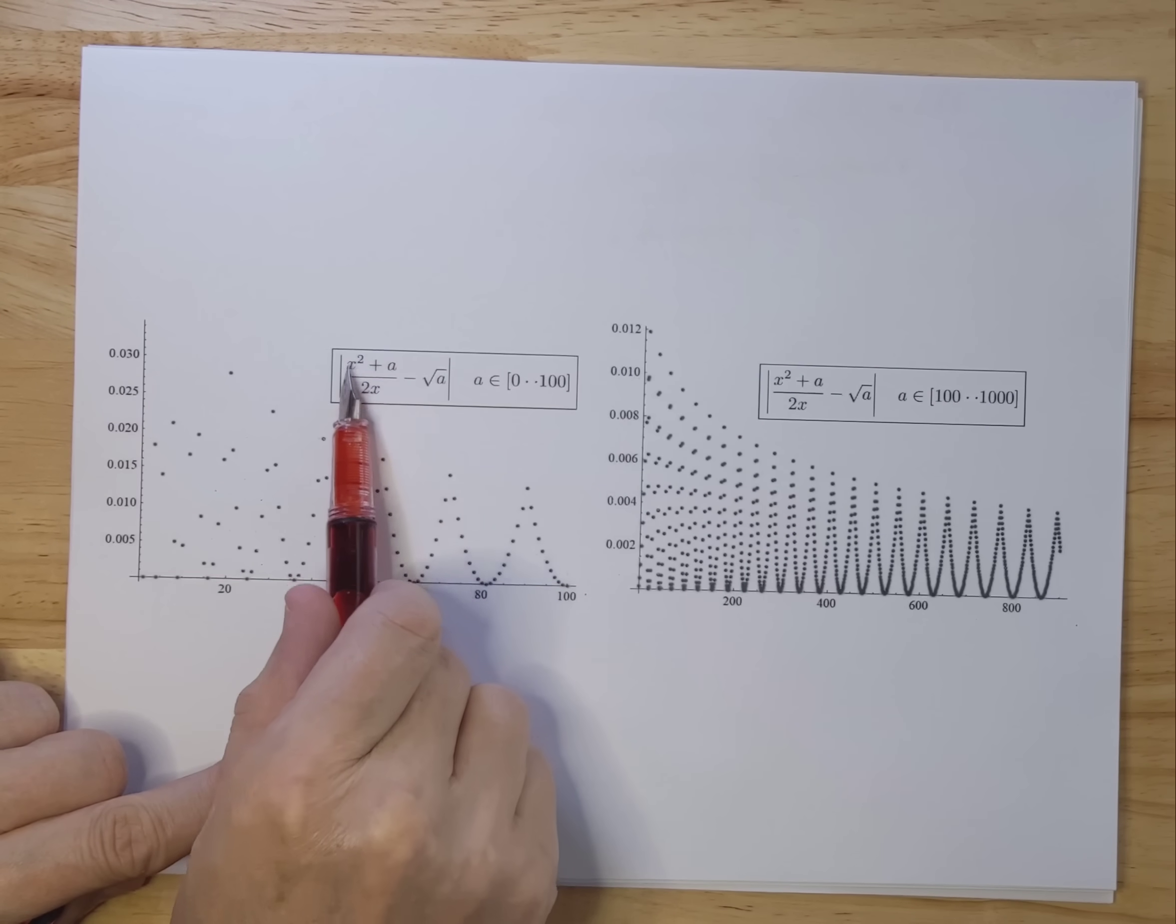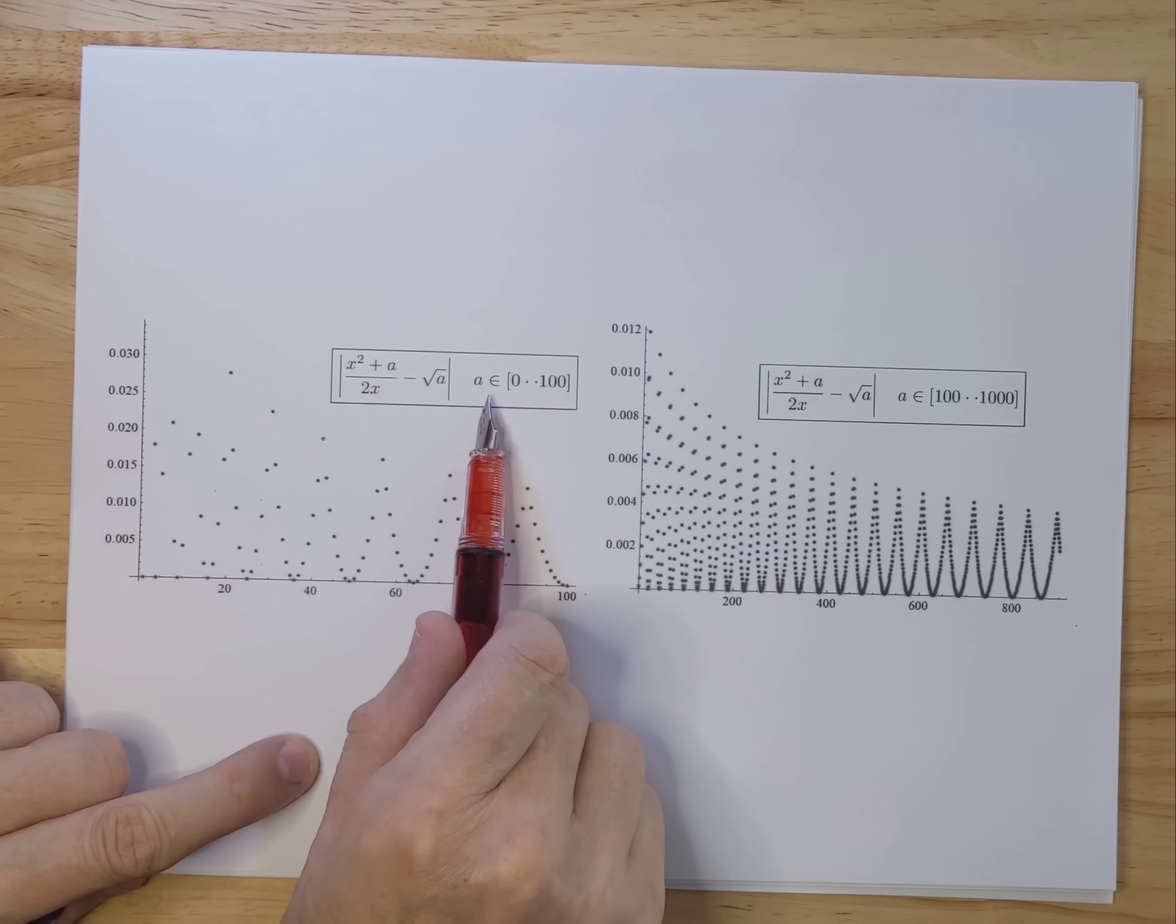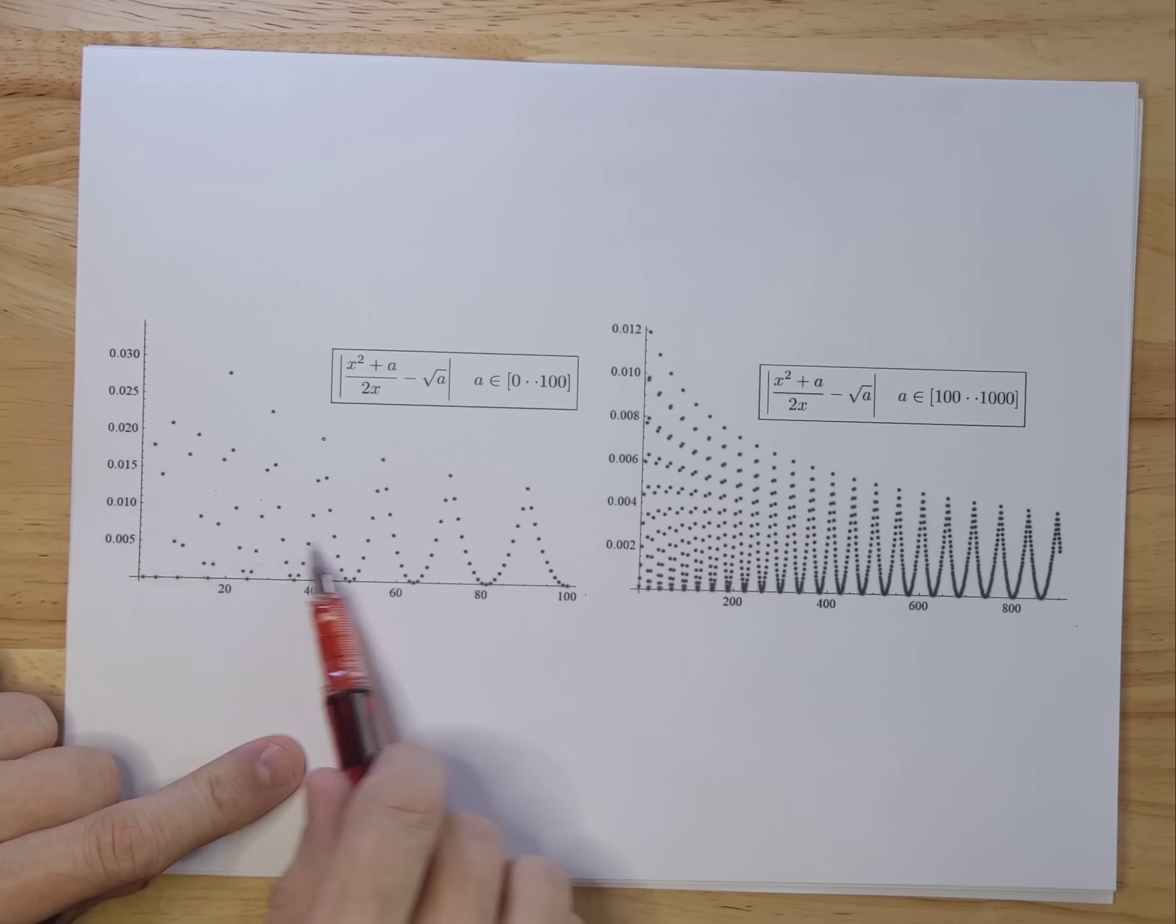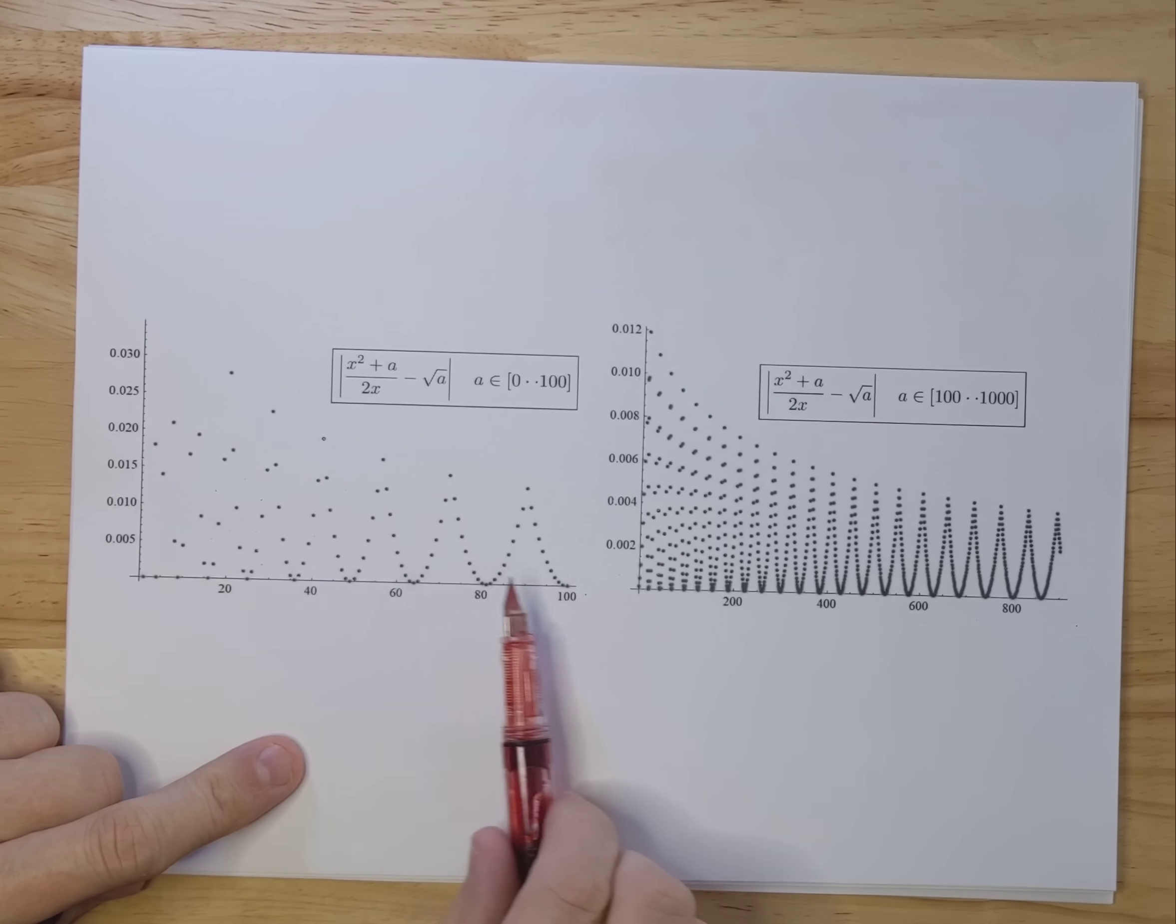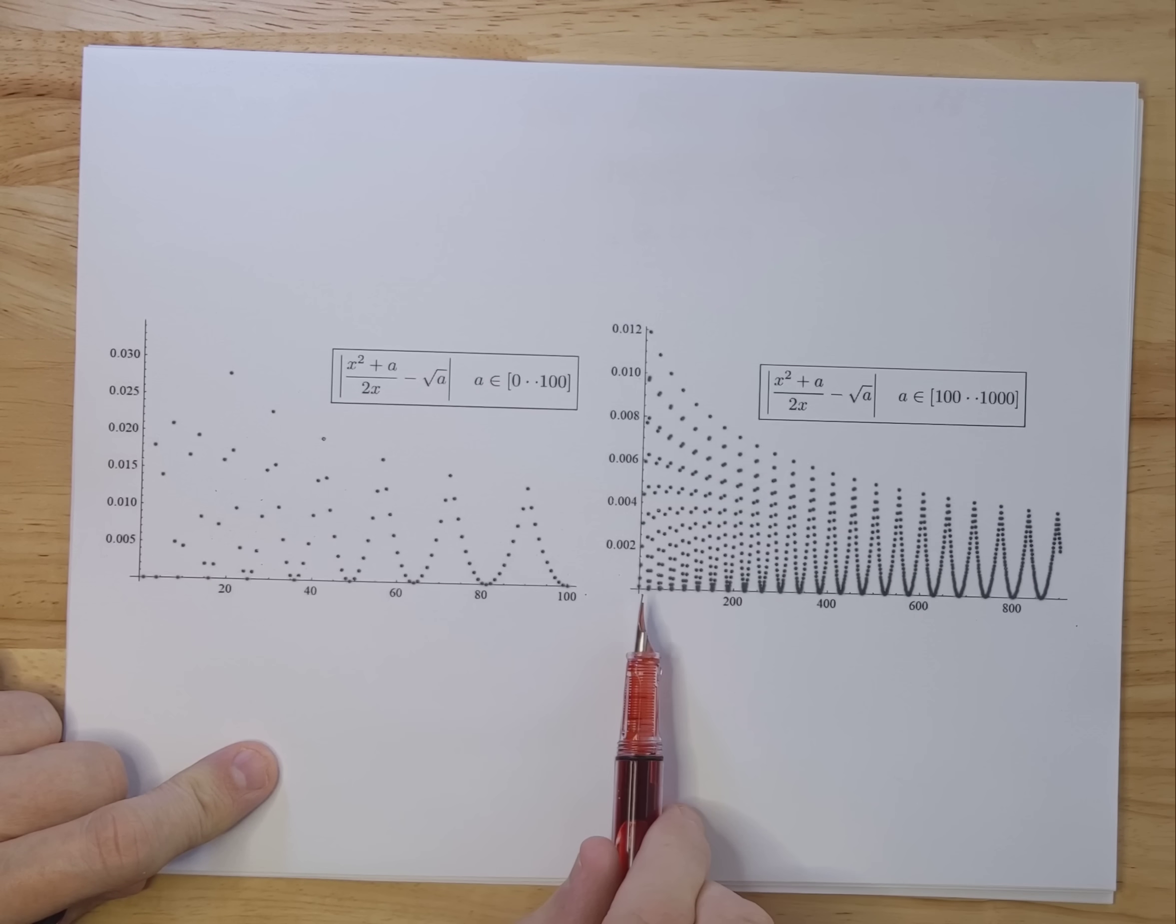I plotted the error. So what did I plot? I plotted the approximation, the formula we are using, minus the exact value, of course limited by the computer. You take the absolute value of that and you plot that for A between 0 and 100. And what you see is the error becomes smaller and smaller when you go up higher in A. And that holds the same for if you go from 100 all the way up to a thousand over here in this plot.